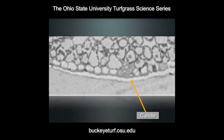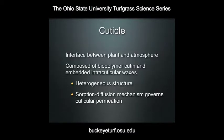Therefore, we think it's the cuticle — the waxy interface between the plant and the outside environment — that actually serves as the primary avenue of entrance of foliar nutrients. The cuticle is composed of a biopolymer called cutin and embedded intercuticular waxes. It has a very heterogeneous structure, and there's what we call a sorption-diffusion mechanism that governs how permeable this layer is.